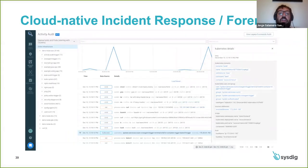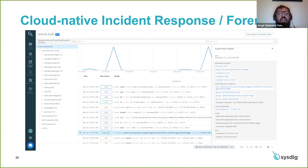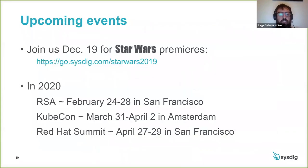Last but not least, this runtime detection data is very important to tell a story of what happened — audit, incident response, and forensics. Being able to correlate orchestration layer activity — for example, a user or service account doing a kubectl exec into a pod and running a number of commands — is something you can do with Sysdig.